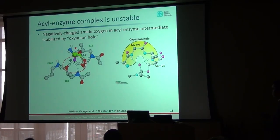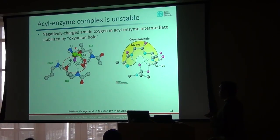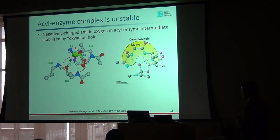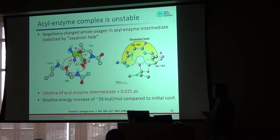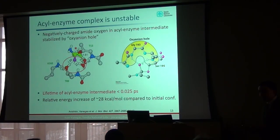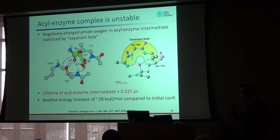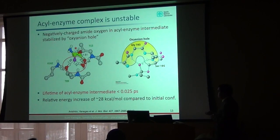In this intermediate, the enzyme is covalently bound to the substrate. We have an oxygen with unpaired electrons that is negatively charged — stabilized by hydrogen bonding donors — called the oxyanion hole. However, using the same ab initio simulations to look at the stability of this complex, it is very unstable. If we allow the system to propagate, in less than 0.125 picoseconds it falls apart, and the proton jumps back to the enzyme. The energy difference between these two states is roughly 28 kJ/mol.